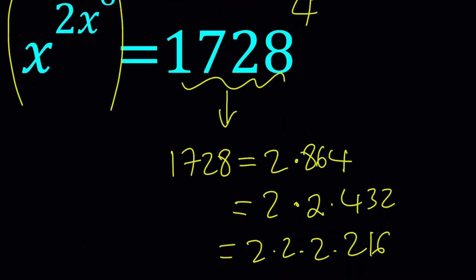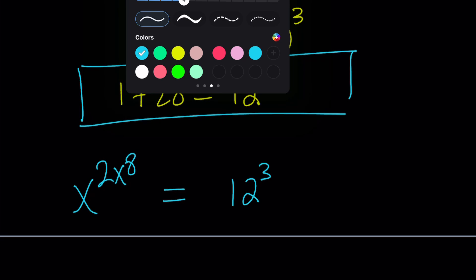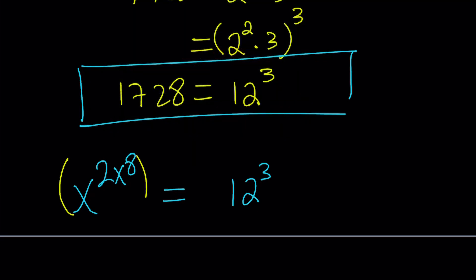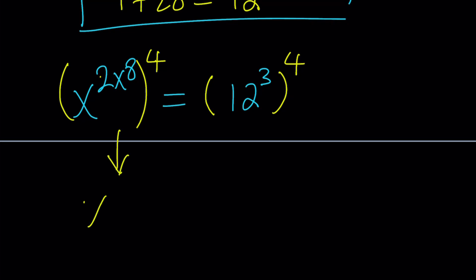So let's use this in our expression. We had X to the power 2X to the 8th equals 12 to the 3rd. Now we're going to raise both sides to the 4th power, because 2 times 4 is 8. On the right-hand side, notice that you're going to get 12 to the power 12 — that's exactly why I started with 12 to the 3rd power. So now we get X to the power 8X to the 8th equals 12 to the power 12.